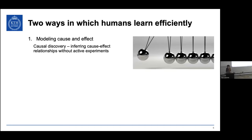Firstly, I would like to tell you about work on causal discovery — modeling cause and effect. I believe one of the reasons why a toddler could recognize elephants from pen drawings is that humans have very elaborate reasoning models. To have that, you need to understand about cause-effect relationships, not only look at correlations in data.